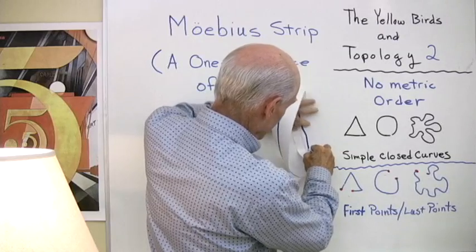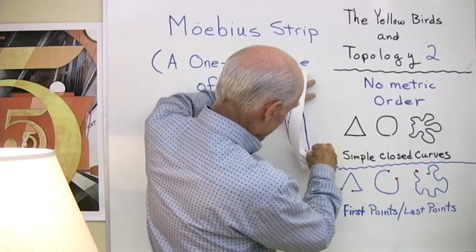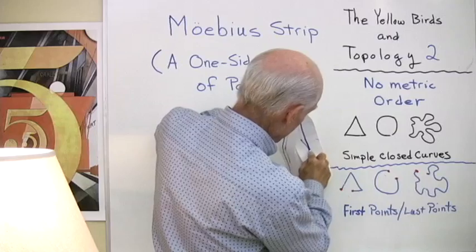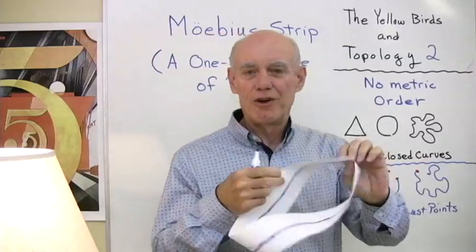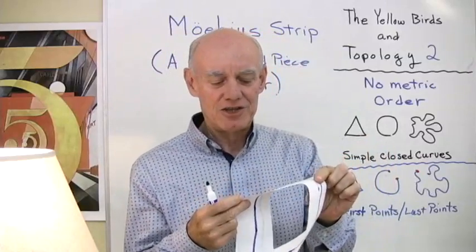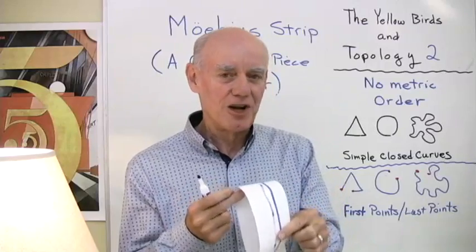And sure enough, sooner or later, I end up right back where I started from and I've colored all over the whole thing without ever crossing an edge. So that's because this has only one side to it and I've just colored on that side.